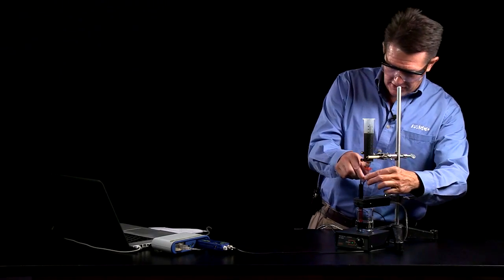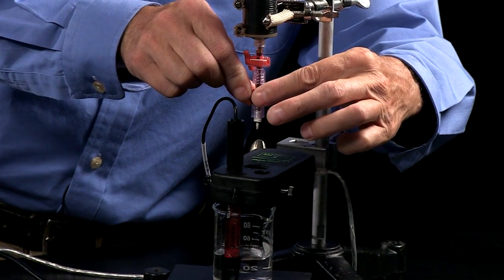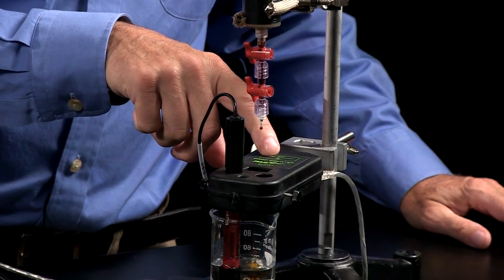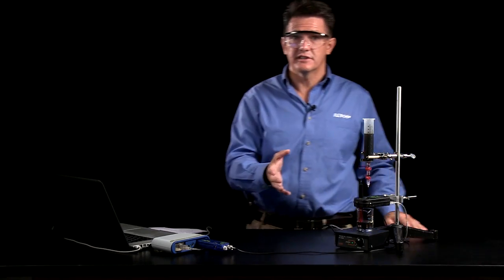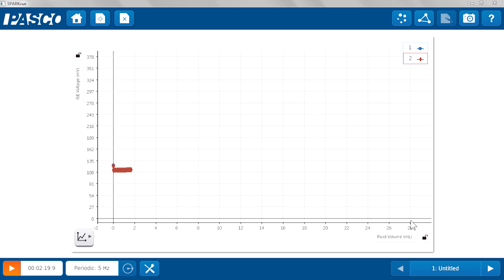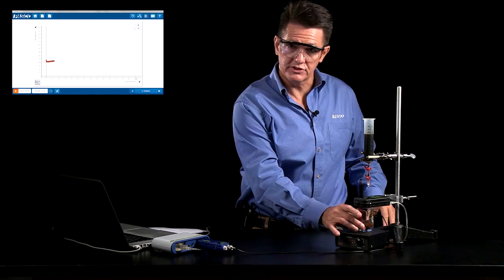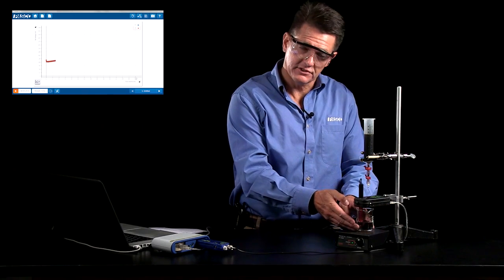I'm going to start my titration now. There I see the drops. I see the drop counter blinking on and off, which means that it is getting a reading. Once the students are done with this titration, they can determine the number of moles of vitamin C inside of this solution.